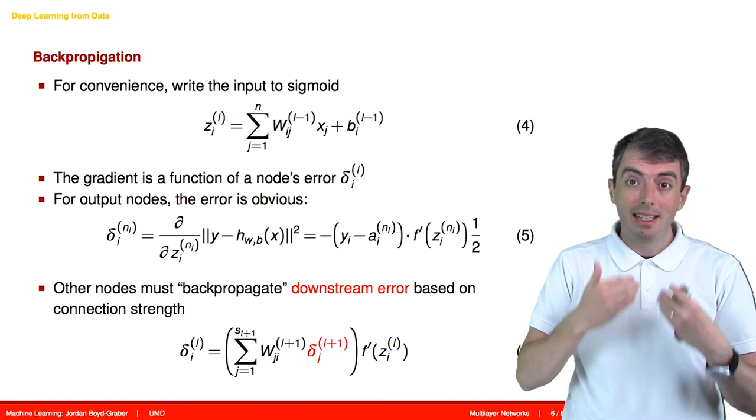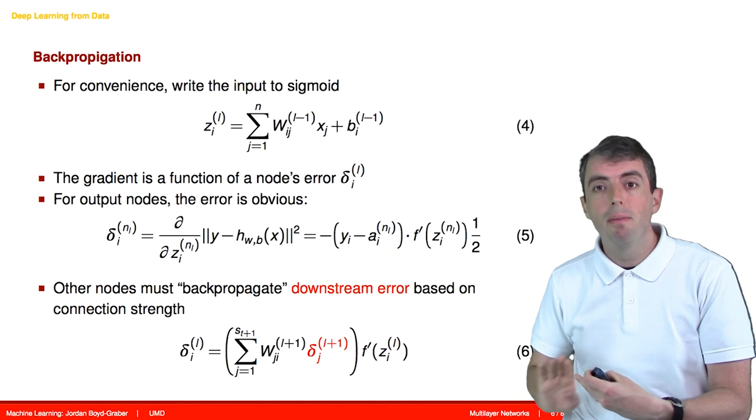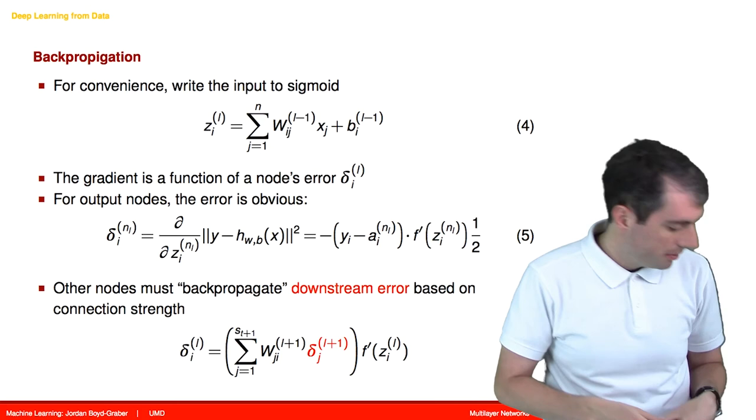Then going in the opposite direction, the backwards direction, and propagating that error into the intermediate nodes.